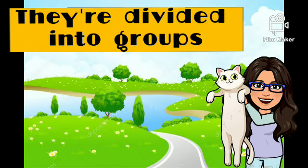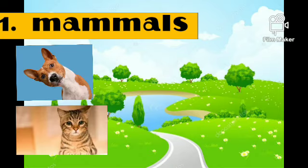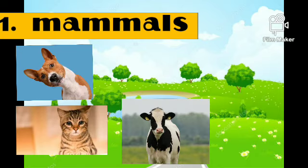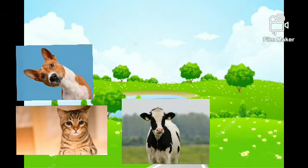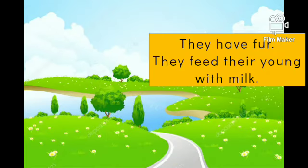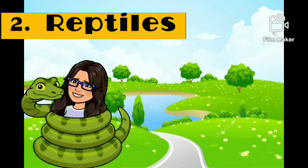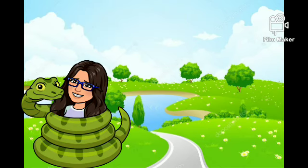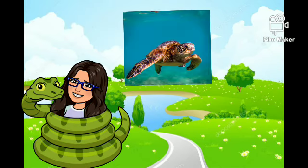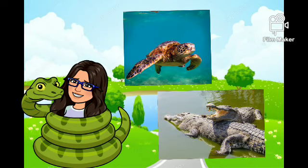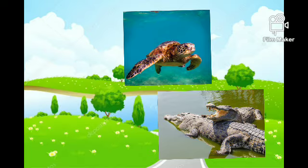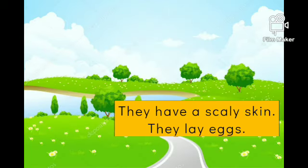The first thing to know is that animals are divided into groups. Group number one: mammals, like dogs, cats, and cows. They have fur and they feed their young with milk. Then we have reptiles, like snakes, sea turtles, and crocodiles. They have scaly skin and they lay eggs.